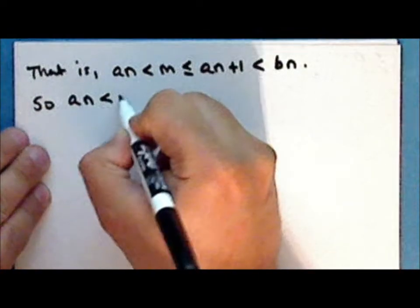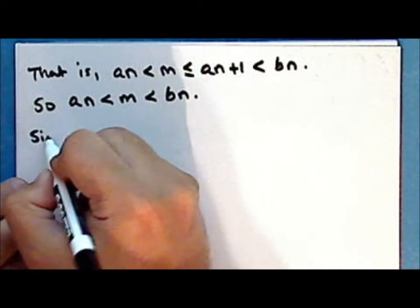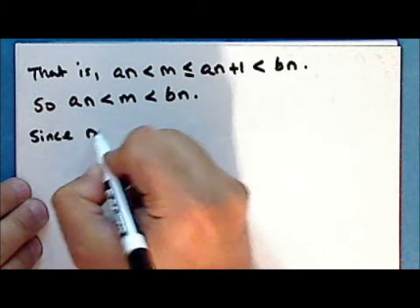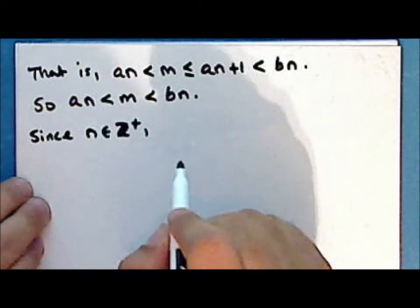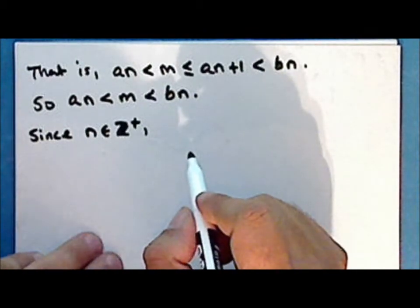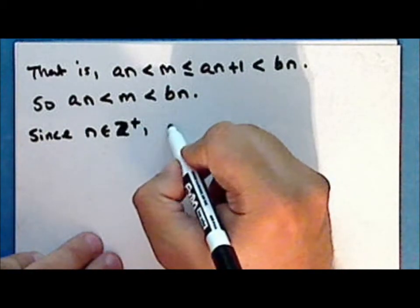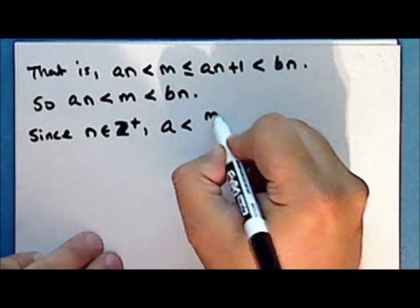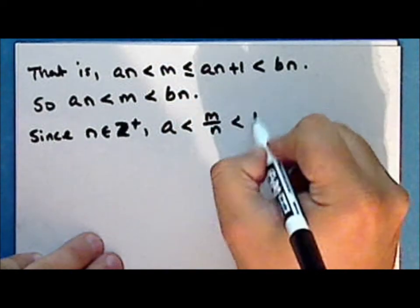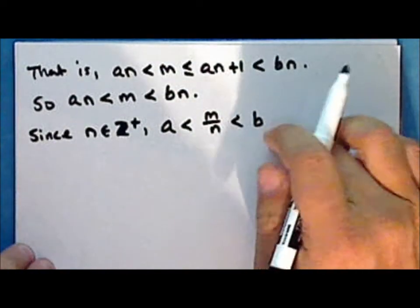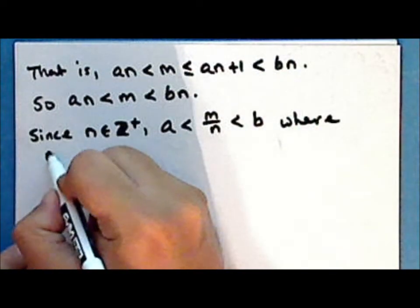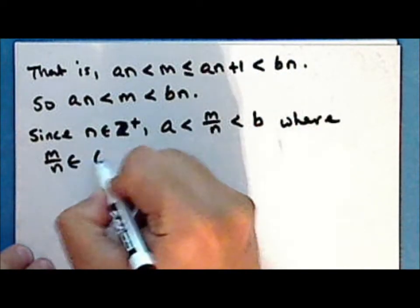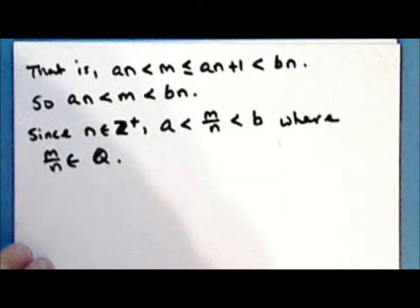And so we have that A times N is less than M, which is less than B times N. Now since N is a positive integer, we can divide through the inequality without changing it, so that A is less than M over N, which is less than B, where M over N is a rational number.